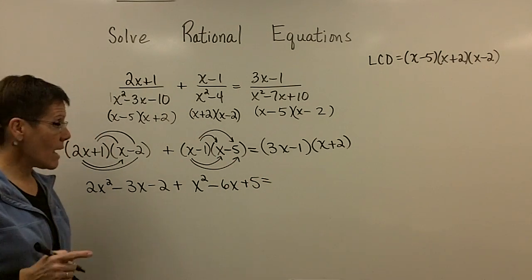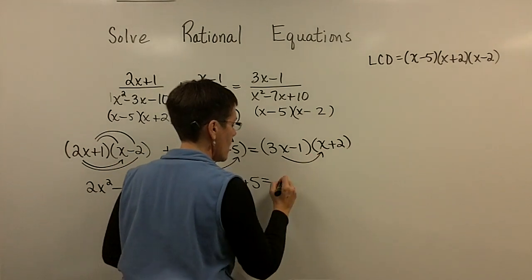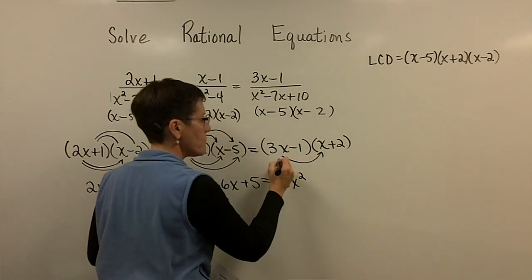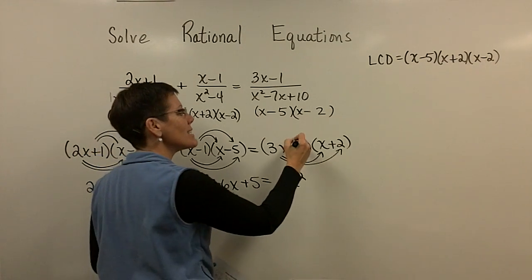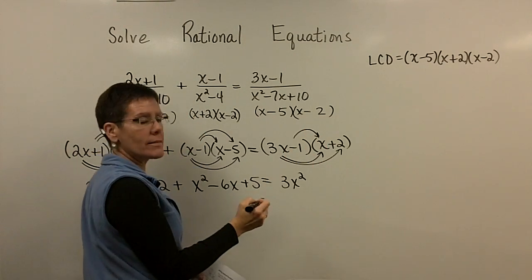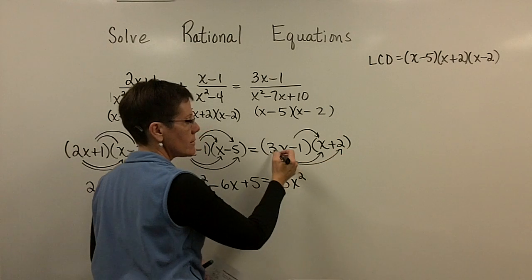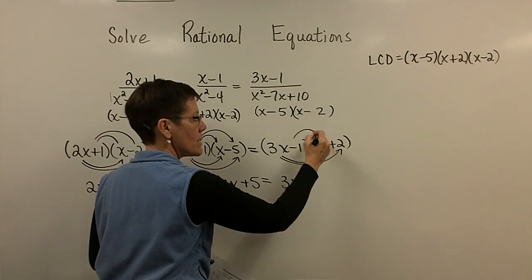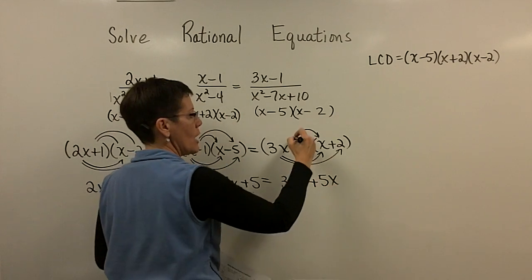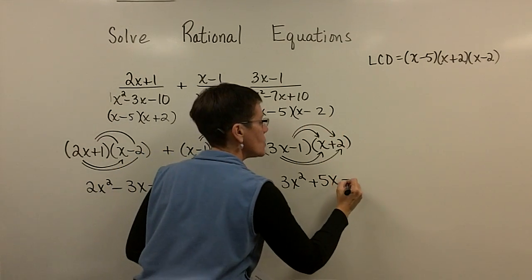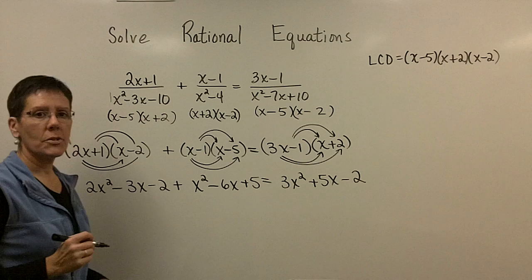So that's that one FOIL. And finally, 3x times x is 3x squared. 3x times 2 is 6x minus 1x. So 6x minus 1x is 5x. And minus 1 times 2 is minus 2.